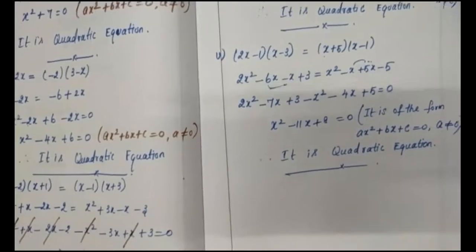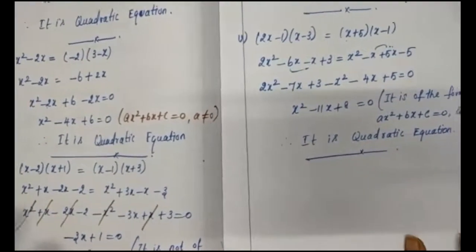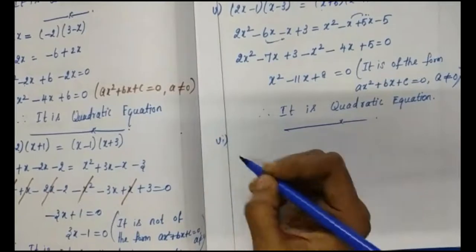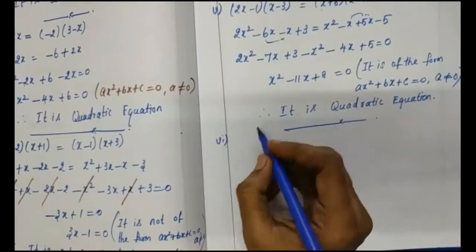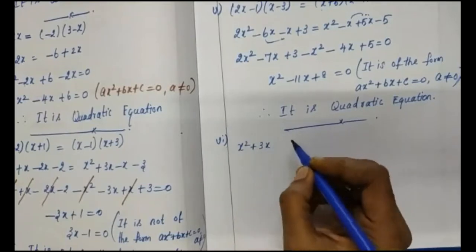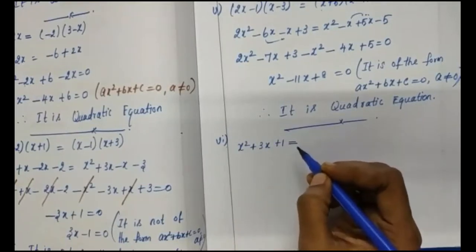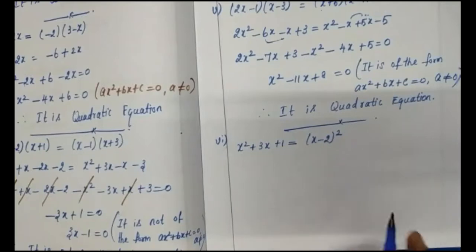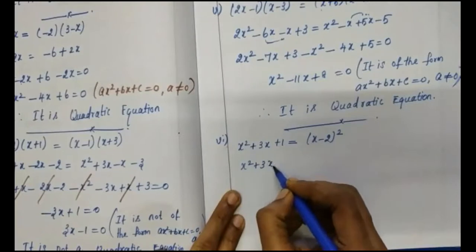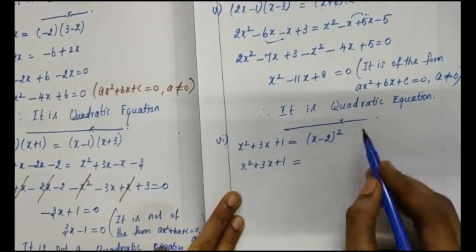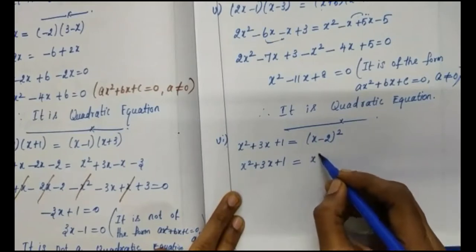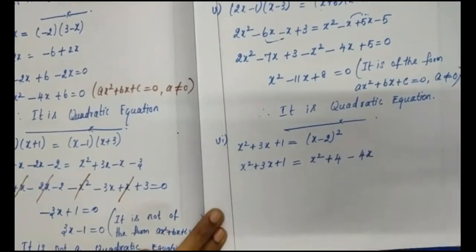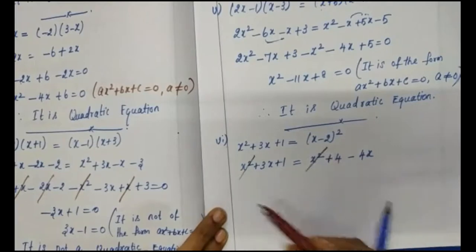Division 6: x squared plus 3x plus 1 equals x minus 2, the whole square. Let's check whether this is a quadratic equation. Expanding the right side using (a−b)² = a² − 2ab + b²: we get x squared minus 4x plus 4. Since both sides have x squared, the x squared terms cancel out.